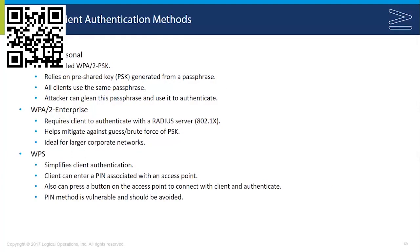Wi-Fi Protected Setup, or WPS, simplifies the client authentication process by enabling the client to enter a PIN associated with an access point, or by physically pressing a button on the access point. The PIN method is vulnerable and should really never be used. In most cases, we should just disable Wi-Fi Protected Setup altogether.